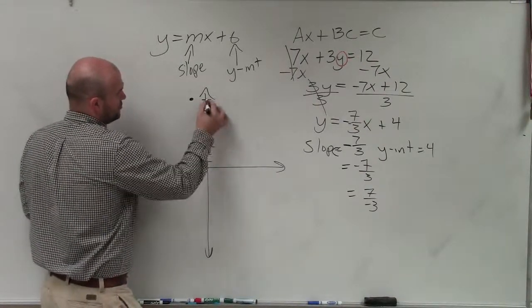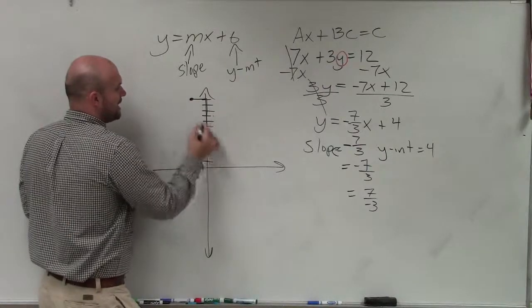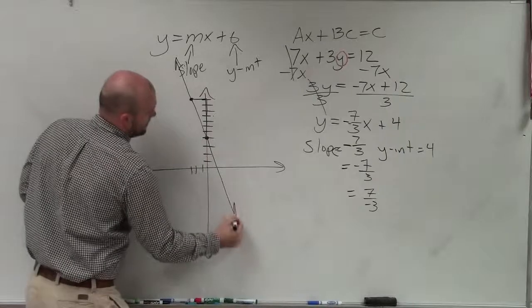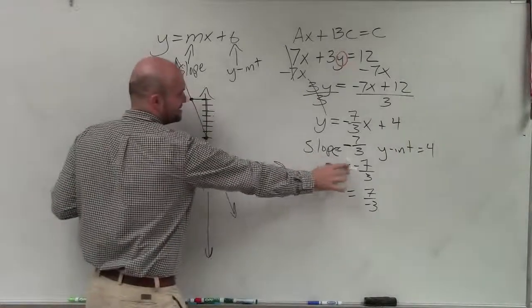That's what we call a slope triangle. So now I have my two points that I can connect to make a line.